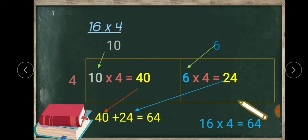What is the next step? We have to add these 2 products: 40 and 24. The process is addition. So 40 plus 24 is 64. The product of 16 and 4 is 64.